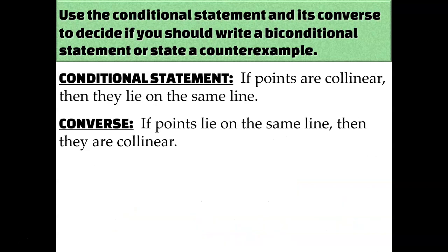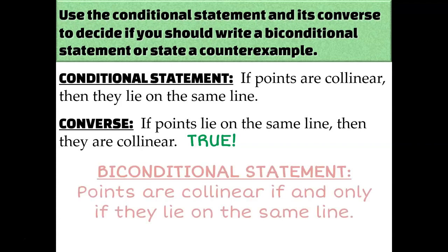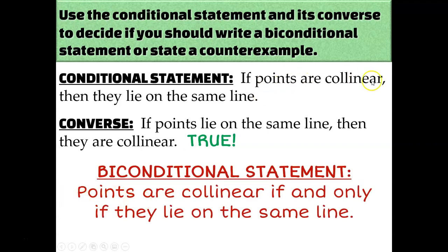Let's try another one. Conditional statement: if points are collinear, then they lie on the same line — true. Converse: if points lie on the same line, then they are collinear. Can you come up with a counterexample? No — that's the definition of collinear. If points are on the same line, then they're collinear by definition. So we write a biconditional statement: points are collinear if and only if they lie on the same line.